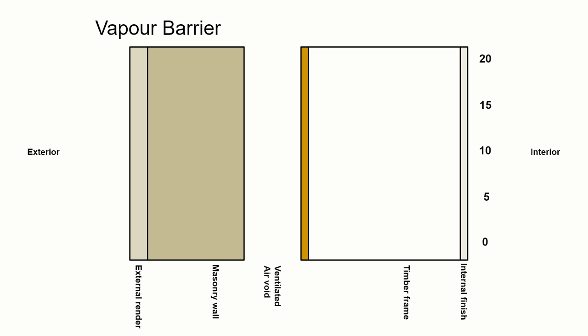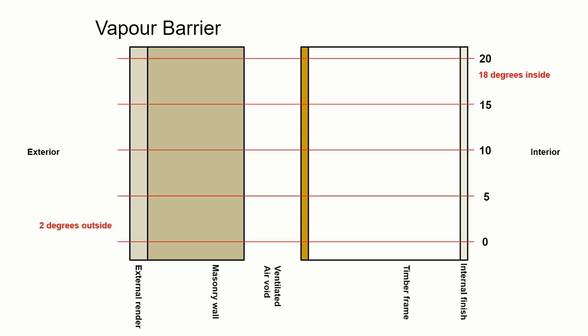In diagram form, we can think about how the wall's built up. Imagine a little section through a building with the interior on one side and the exterior on the opposite side. This might be a timber frame with brickwork or blockwork outer leaf. We've got an internal finish, our timber frame, the sheathing is the brown stripe there, then a ventilated air void, a masonry wall, and an external render.